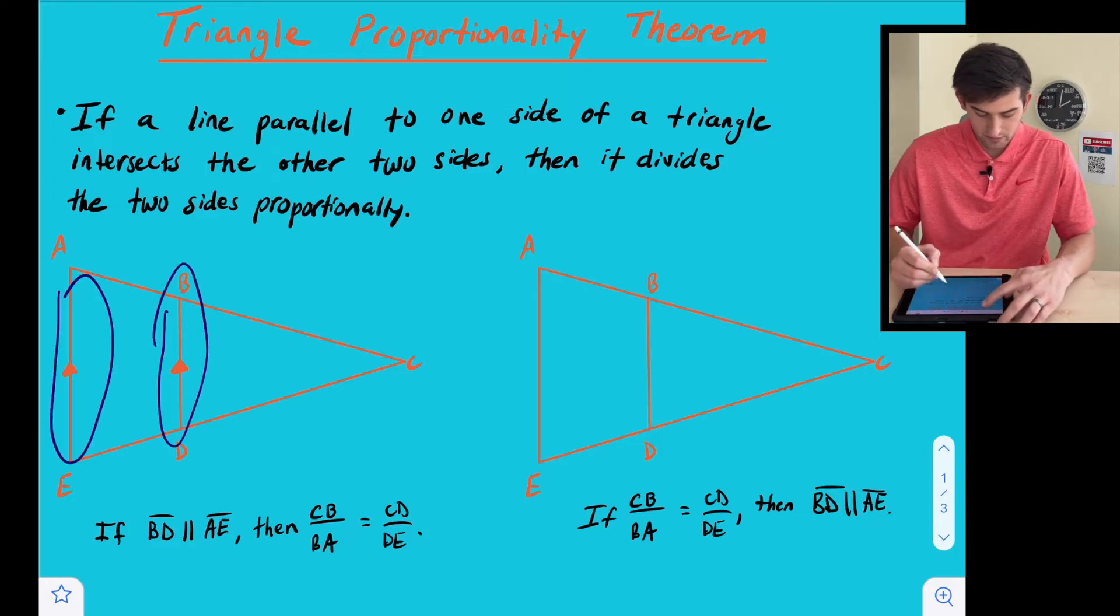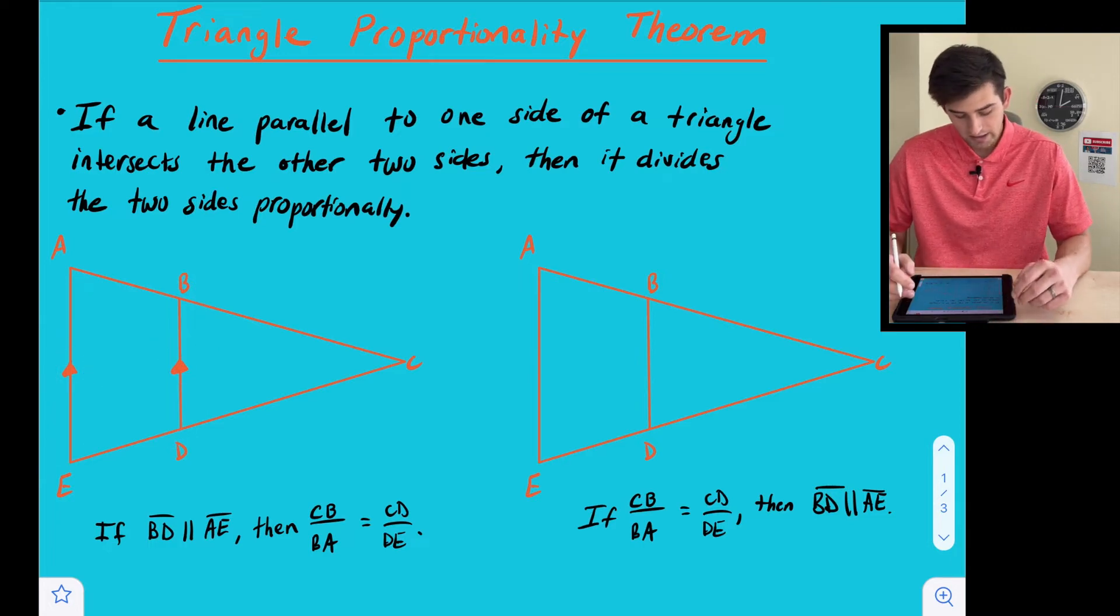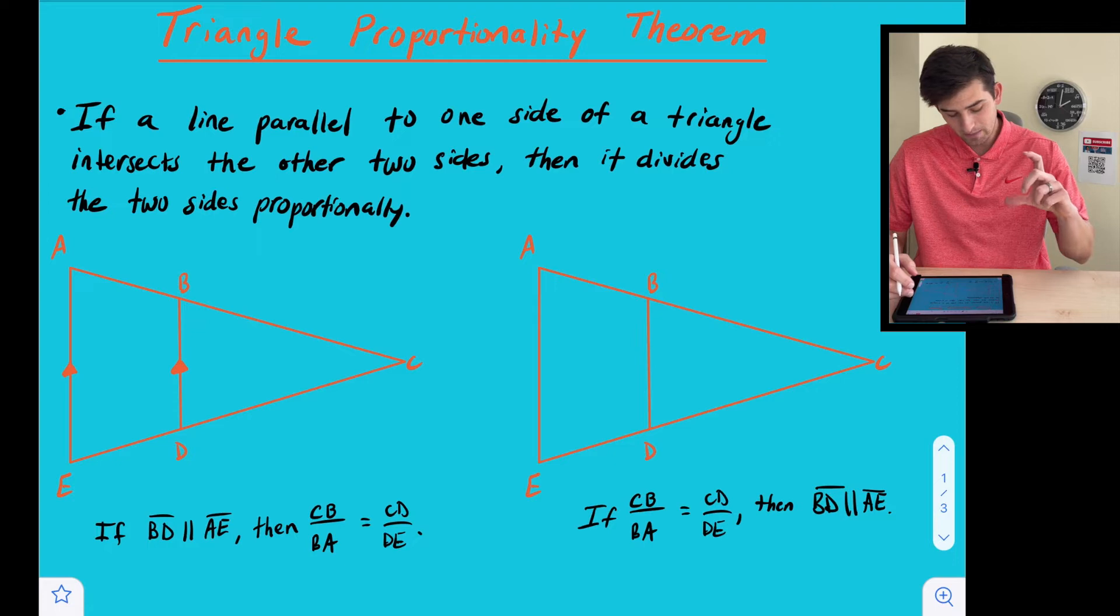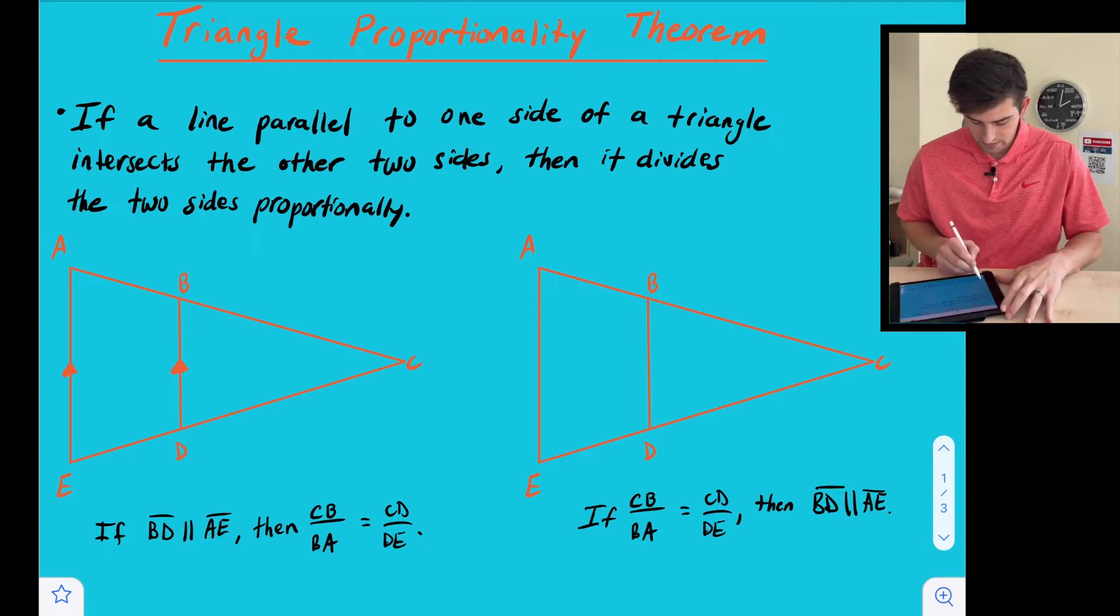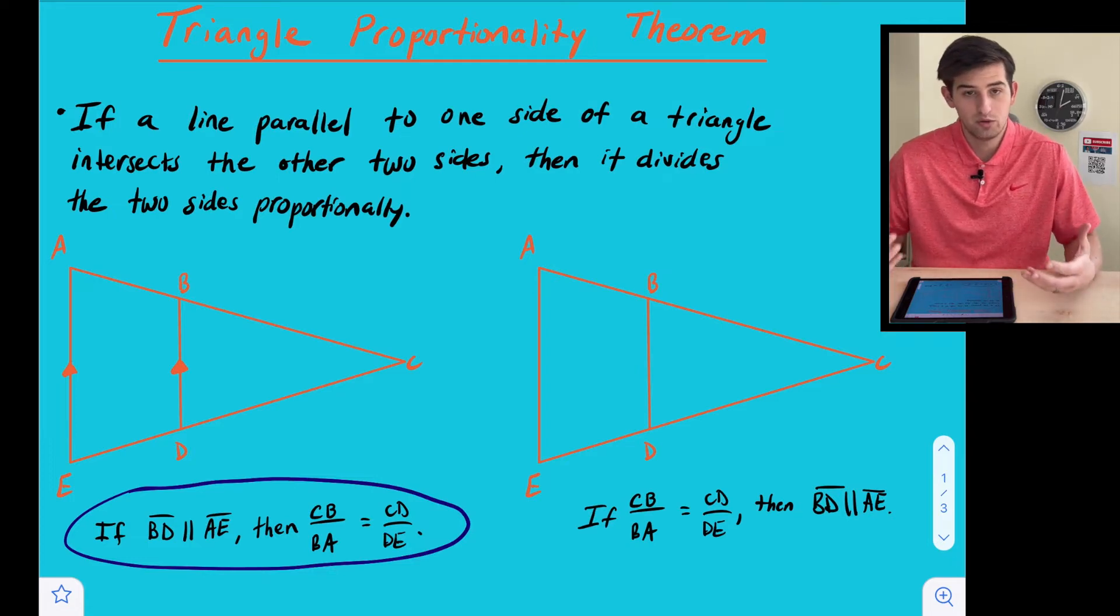So these two lines are parallel, right? That's what these arrows mean. Those lines are parallel and segment or line BD intersects the other two sides of the triangle. So it gives us this if-then statement right here. If line BD is parallel to segment AE, then here's where our proportionality theorem comes in, or our proportion comes into play.